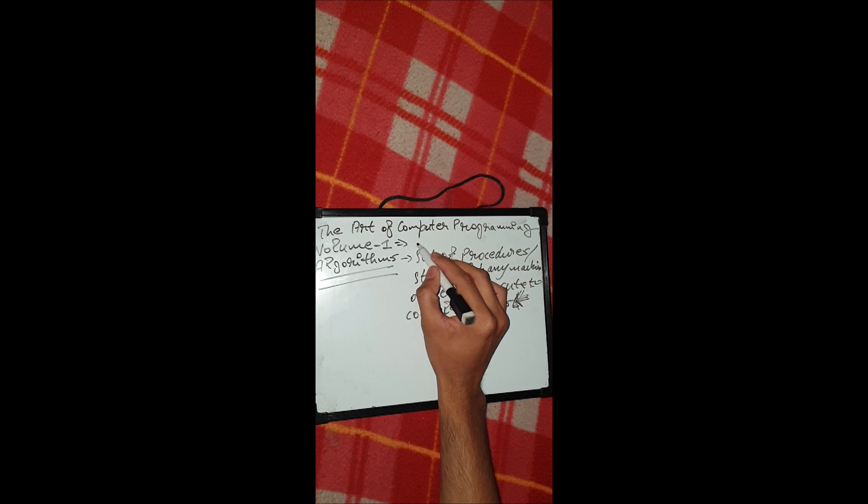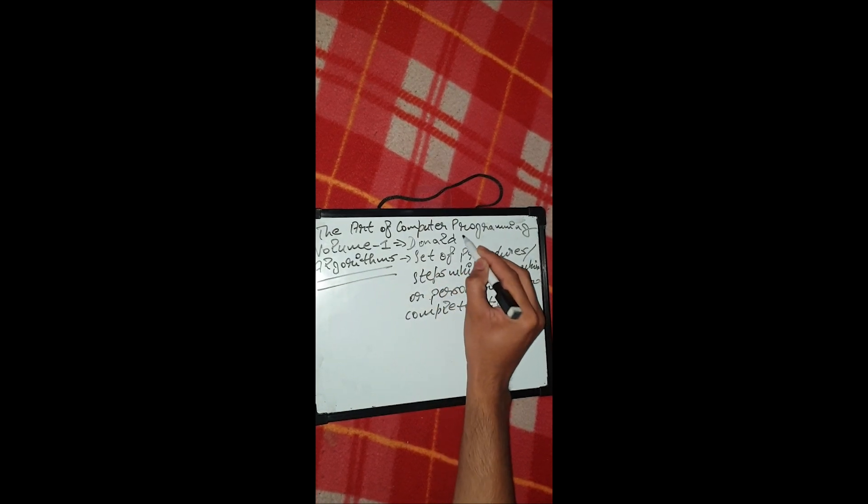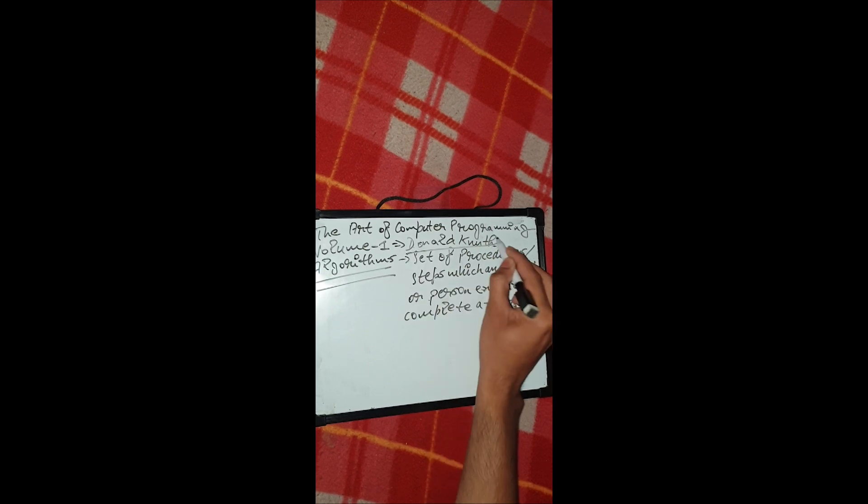In the computer science world we often hear about algorithms — what does it mean by algorithm, and what does it mean to program certain algorithms in languages like C, C++, Java, or Python? The basic starting point of computer science is algorithms. That's why Donald Knuth, the writer of this book, puts a lot of emphasis on starting with the word algorithm.